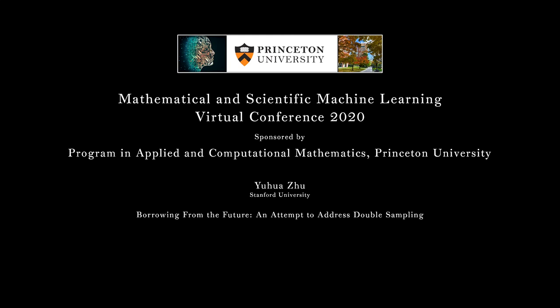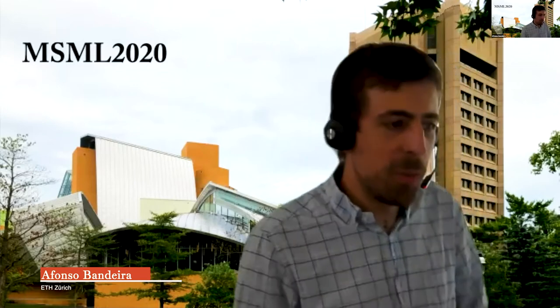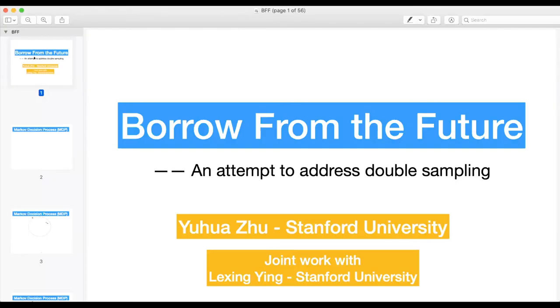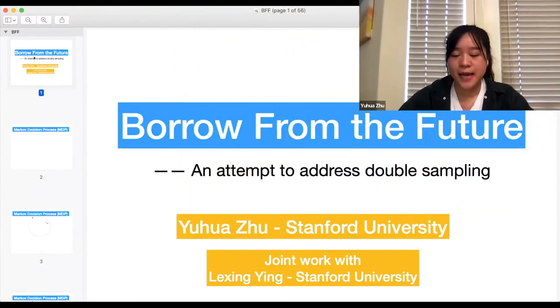Next we have Yu Zhu, also from Stanford University, and she will tell us about borrowing from the future and attempt to address double sampling. Thanks for the introduction. Today I'm going to talk about a new algorithm to alleviate the double sampling problem in model-free reinforcement learning. This is a joint work with Lo Seng Yin at Stanford.